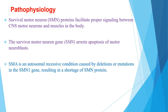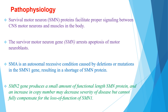Spinal Muscular Atrophy is an autosomal recessive condition caused by deletion or mutation of the survival motor neuron 1 gene, resulting in a shortage of survival motor neuron protein, which causes progression of apoptosis of motor neuroblasts. Survival motor neuron 2 gene produces a small amount of functional full-length survival motor neuron protein, and an increase in copy number may decrease severity of disease but cannot fully compensate for the loss of function of SMN1.